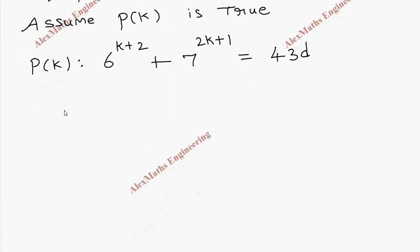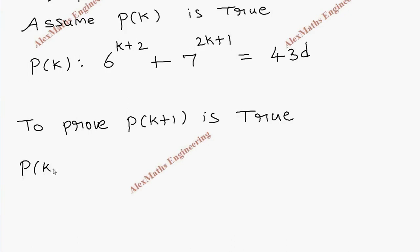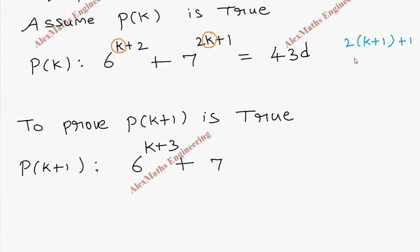Now to prove P(k+1) is true, we write the expression for P(k+1). Substituting k+1 in place of k: 6^(k+3) + 7^(2(k+1)+1). Expanding the exponent: 2k+2+1, which gives 2k+3. So P(k+1) is 6^(k+3) + 7^(2k+3).